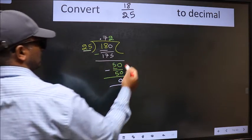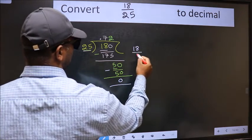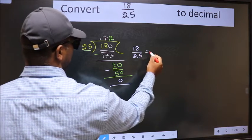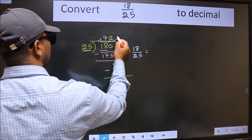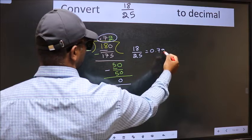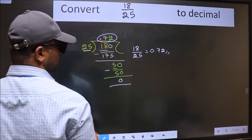Therefore, the decimal of 18 by 25 is 0.72. This is our answer.